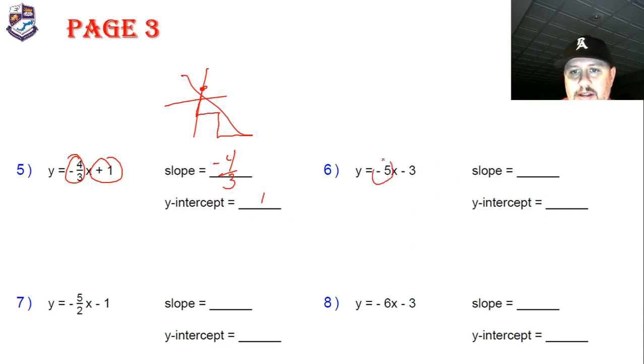The slope is negative five, and my run is negative three. Oh, I said that wrong. Sorry. My slope is negative five and my y-intercept is negative three. Sorry, I got slope in my mind.